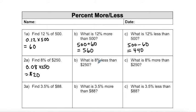If I want to find out what 8% less than $250 is, I want to take my $20 and subtract it from my $250 to give me $230. And if I wanted to know what 8% more than $250 is, I would take my $250 and add my $20 to give me $270 as my final answer.